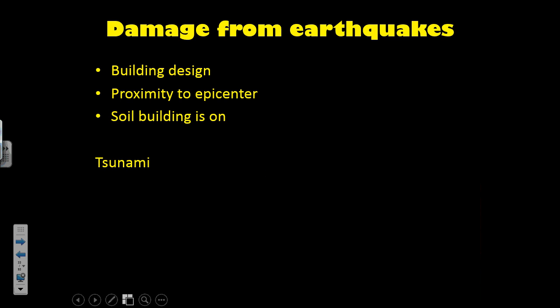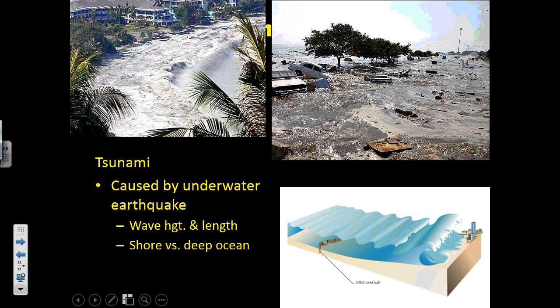Sometimes, depending on where the earthquake epicenter is — especially if it happens to be underneath the ocean floor — it can generate a tsunami. These are pictures from the Sumatra tsunami, which happened in 2005, and an equally terrible one that happened in Japan in 2011.